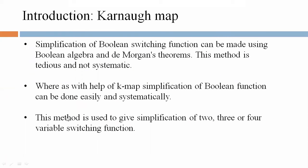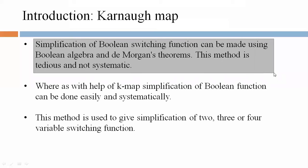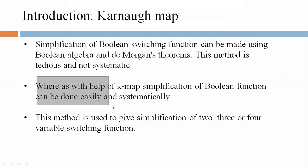Now we are discussing Karnaugh map. Simplification of Boolean switching function can be made using Boolean algebra and De Morgan's theorems. This method is tedious and non-systematic, whereas with help of K-map, simplification of Boolean function can be done easily and systematically.